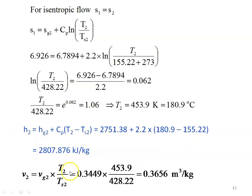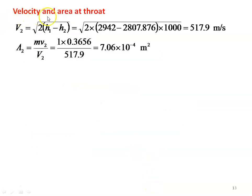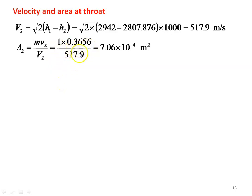We calculate the enthalpy at the throat: H2 equal to Hg2 plus Cp into (T2 minus Ts2), which is 2751.38 plus 2.2 into (180.9 minus 155.22) equal to 2807.876 kilojoules per kilogram. The specific volume at the throat: V2 equal to Vg2 into (T2 by Ts2), which is 0.3449 into (453.9 divided by 428.22) equal to 0.3656 meter cube per kilogram. The throat velocity: V2 equal to square root of 2 into (H1 minus H2), which is square root of 2 into (2943 minus 2807.876) into 1000 equal to 517.9 meters per second. The throat area from the continuity equation: A2 equal to M into V2 divided by V2 equal to 1 into 0.3656 divided by 517.9 equal to 7.06 times 10 to the power minus 4 meter square.